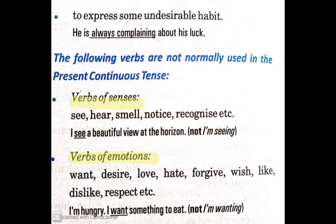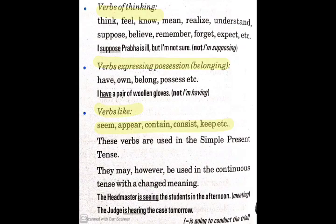With verbs of thinking, like think, feel, know, mean, remember, etc. — for example: 'I suppose Pratibha is ill, but I am not sure.' Here we are thinking, we are supposing something, and in those cases we do not use present continuous tense. Next are verbs expressing possession or belongingness, like have, own, belong, possess, etc. In those cases we also do not use present continuous tense. For example: 'I have a pair of woolen gloves.'